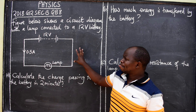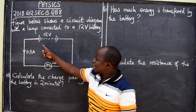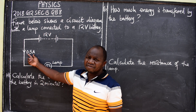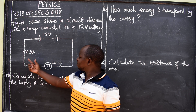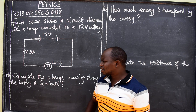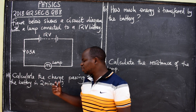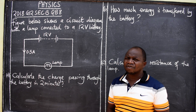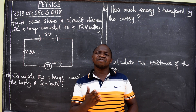We have a circuit diagram here connected to a 12-volt battery, and you can see the flow of current — 0.5 amps. We also have the lamp connected. The first part says: calculate the charge passing through the battery in two minutes.